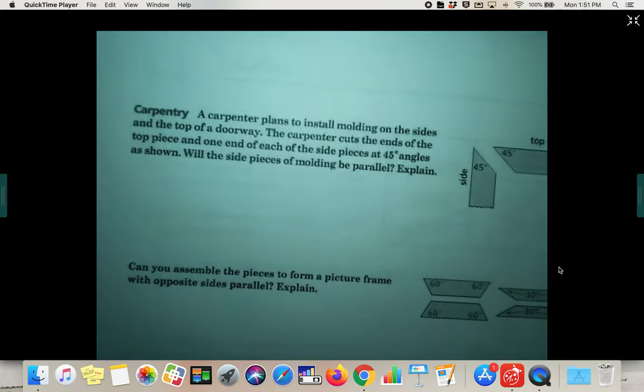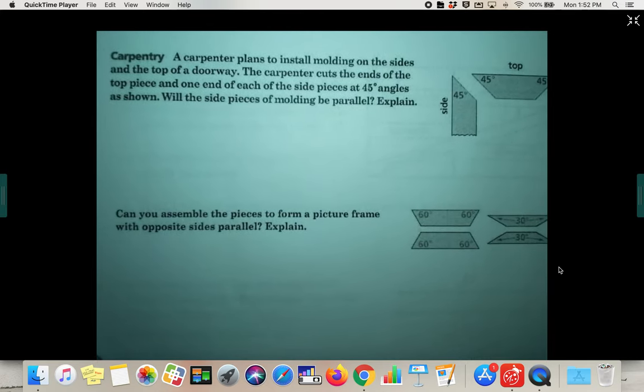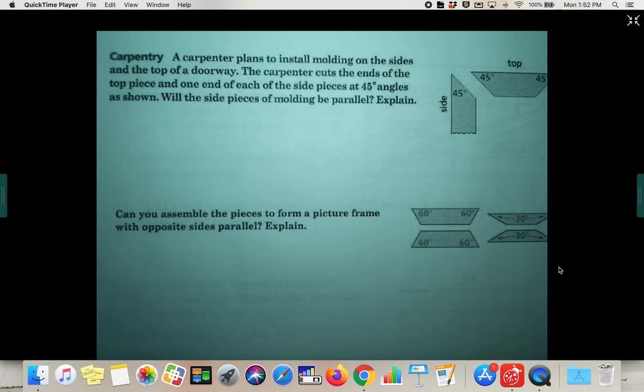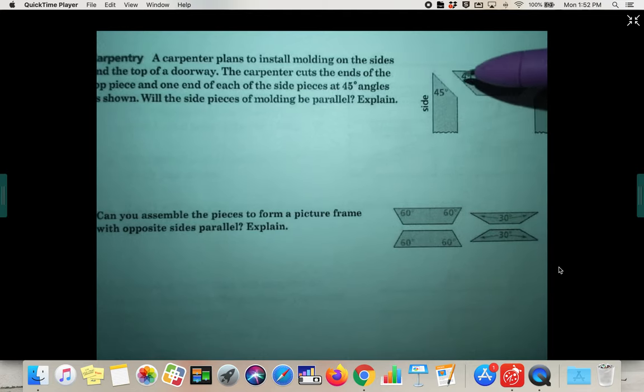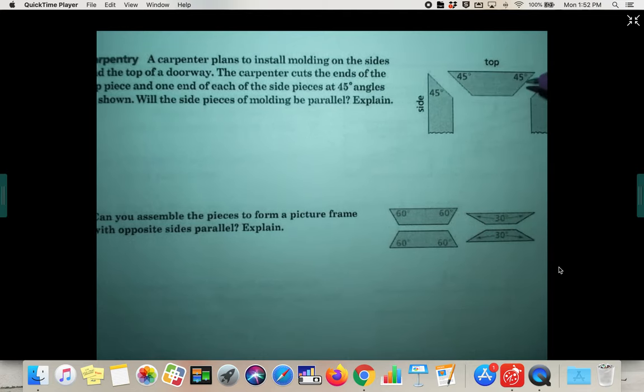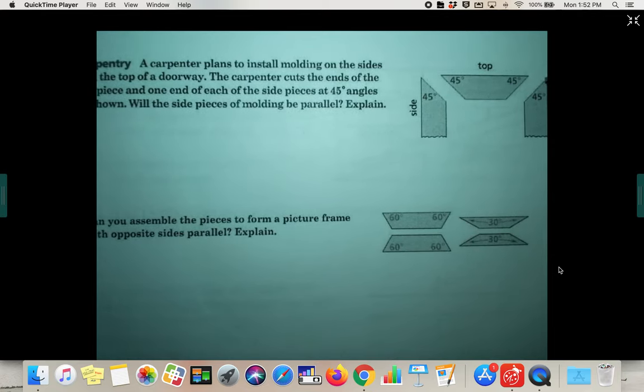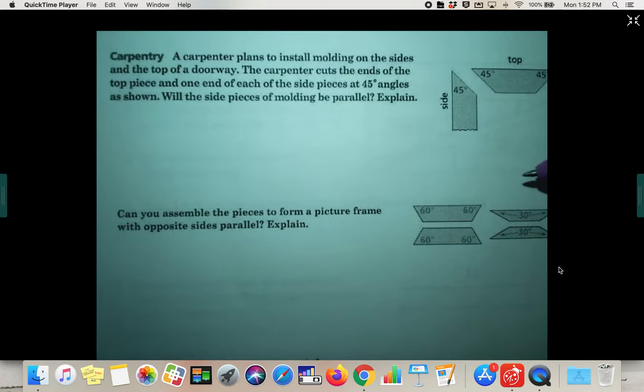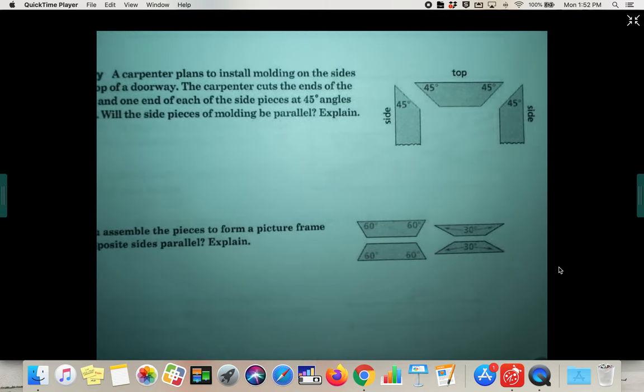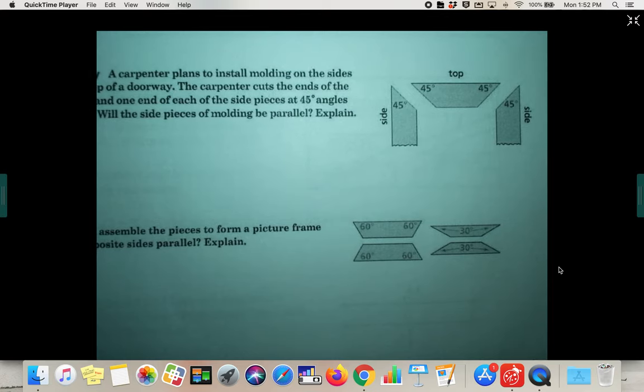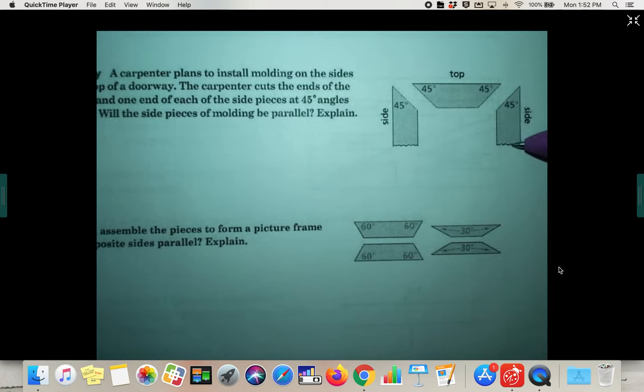Alright, knowing that, let's try the next page. We've got a carpentry problem. A carpenter plans to install molding on the sides and the top of a doorway. The carpenter cuts the ends of the top pieces and one end of each of the side pieces at 45-degree angles as shown. Will the side pieces of molding be parallel?